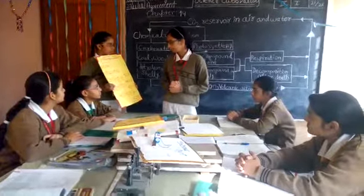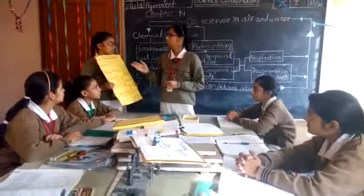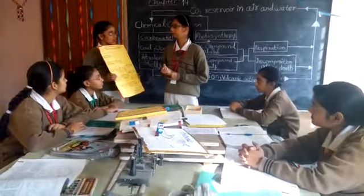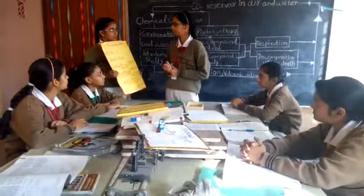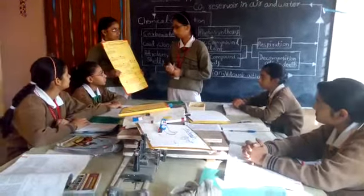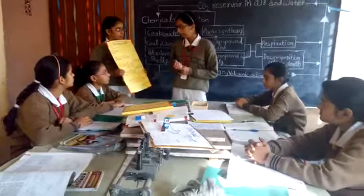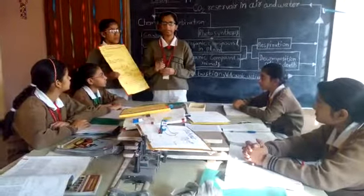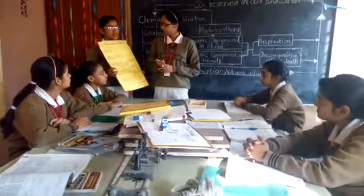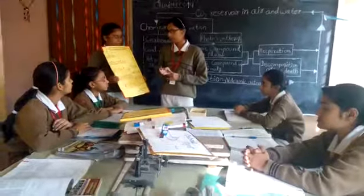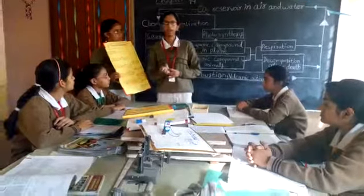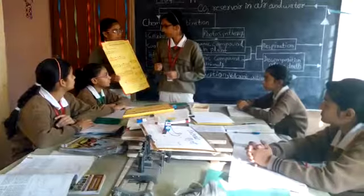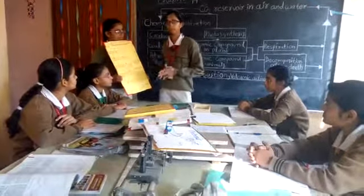Combustion is responsible for the production of carbon dioxide in our nature, in air and water. Volcanic activity such as volcanic eruption is also responsible for the occurrence of lava and various carbon-related activities.